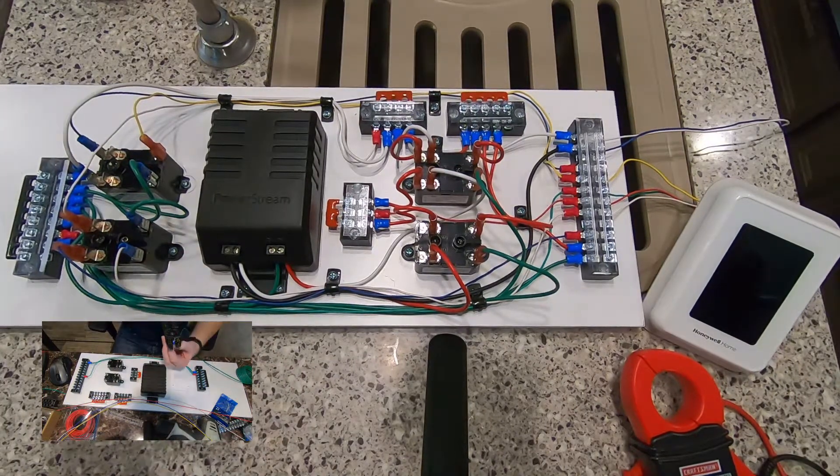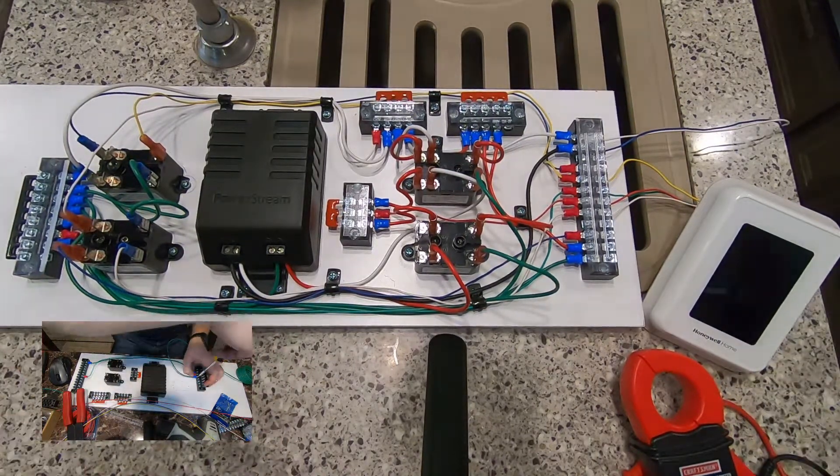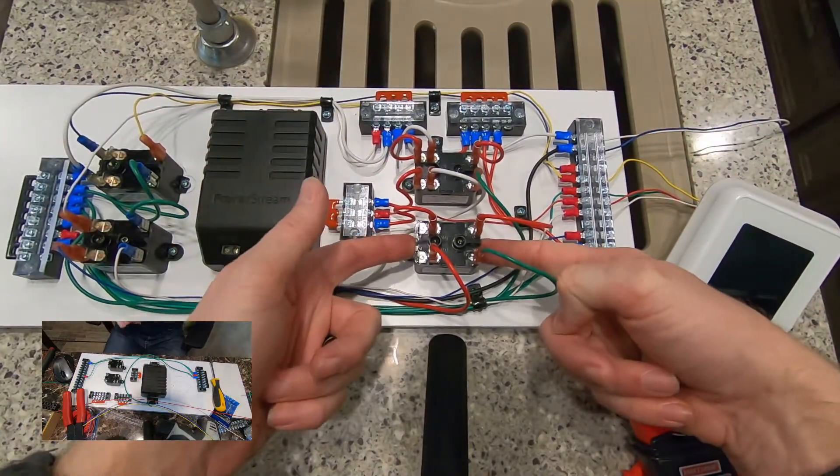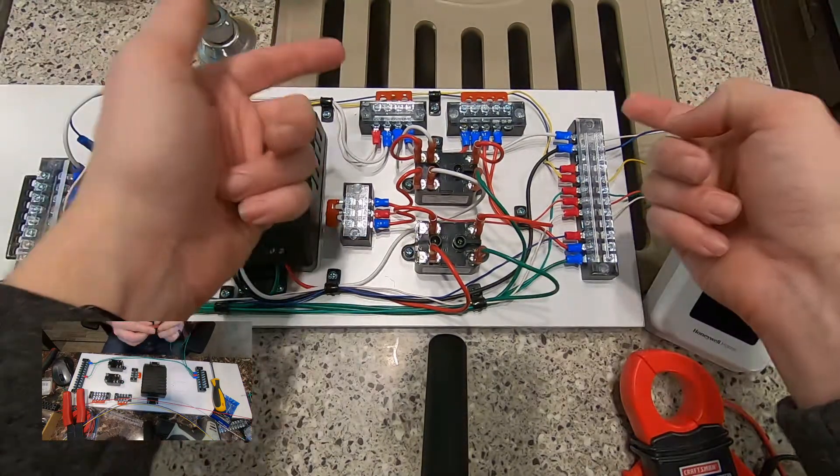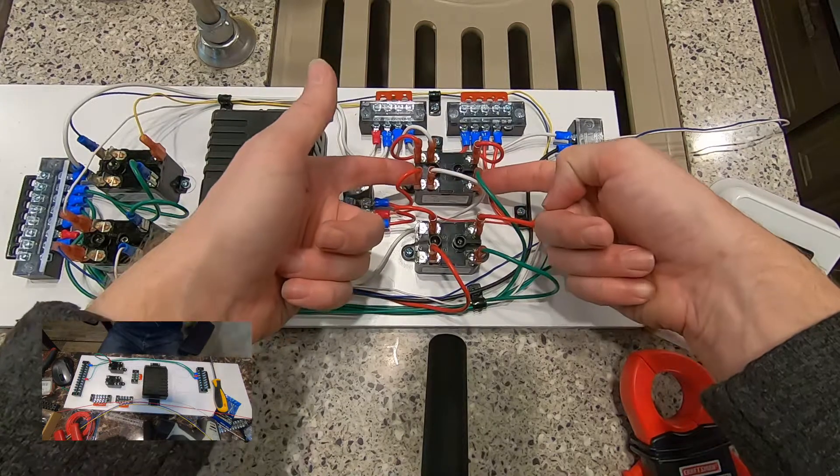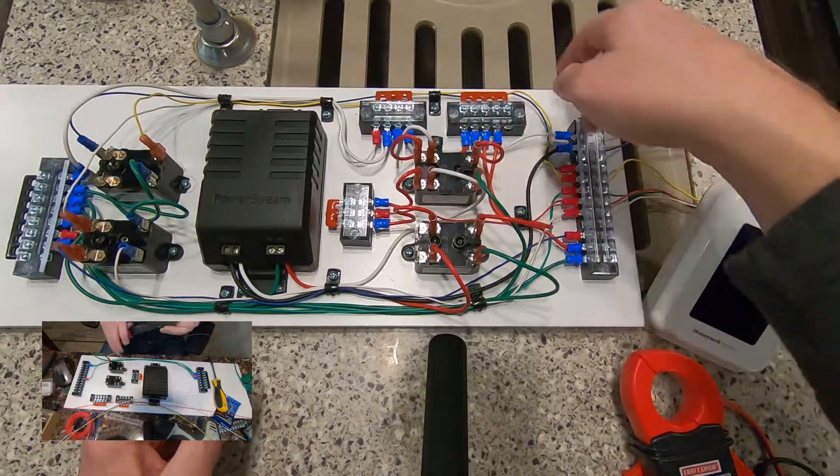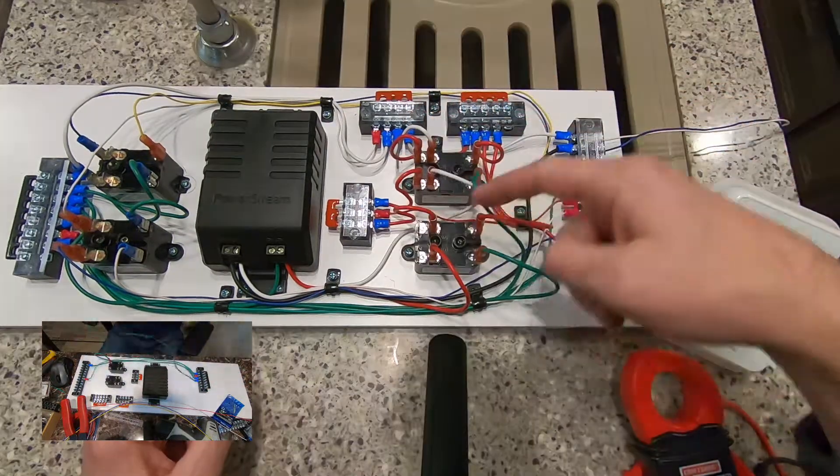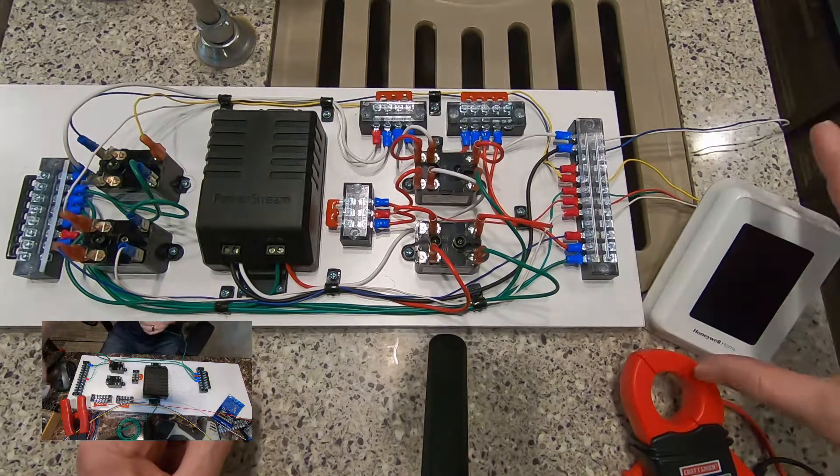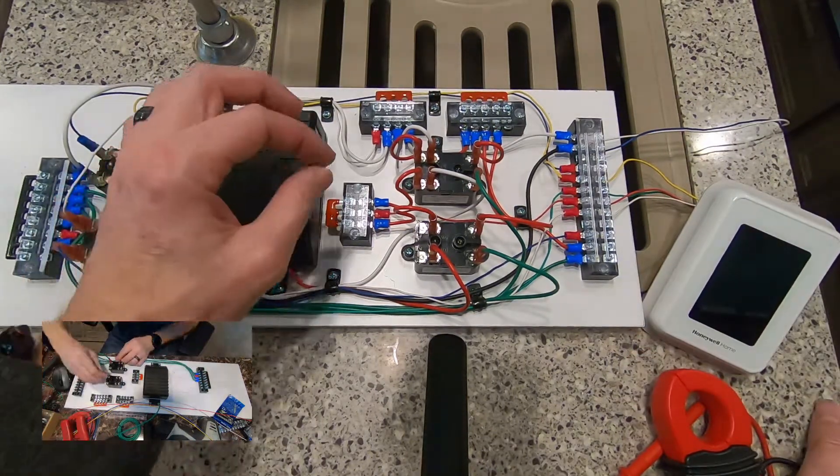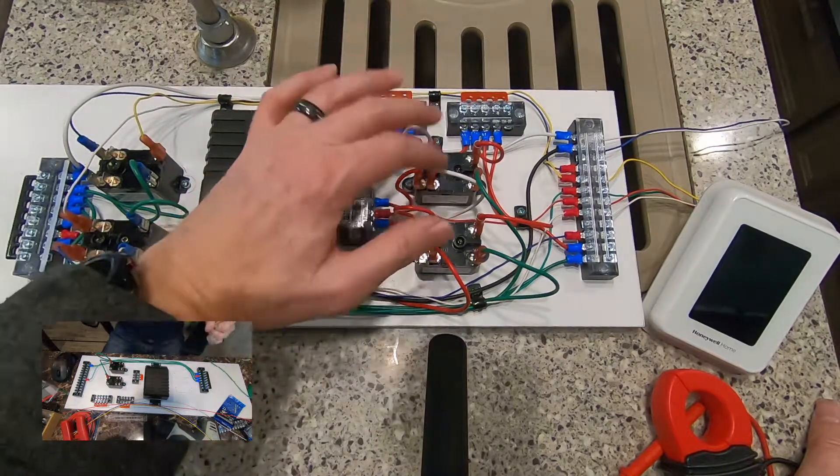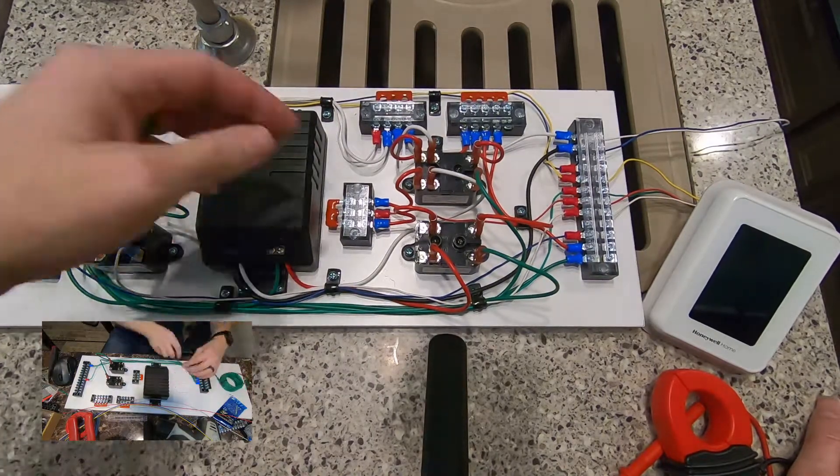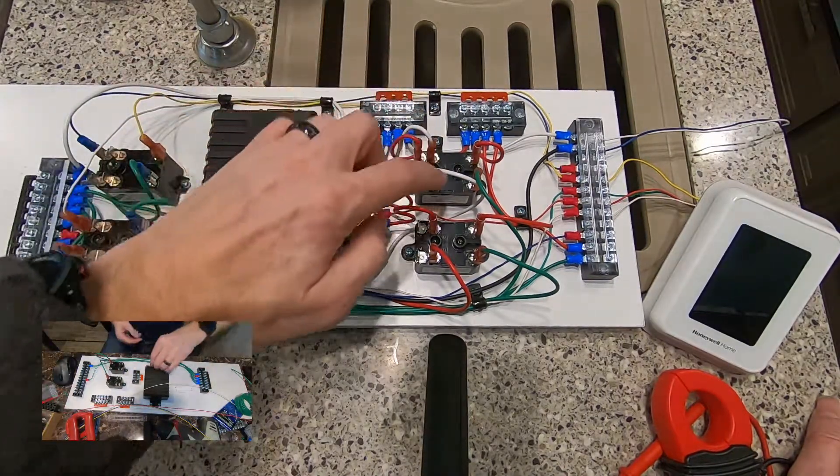When the doorbell transformer is on, meaning we're plugged into shore power, this relay here is not going to be passing any power through. When 24 volts is applied to this one, the power is going to come in, go across these red wires, and then work its way to this terminal, out through here, and then the red wire will take it up to this thermostat. I've got the other terminals connected because when I have the 24 volt off, we don't have shore power.